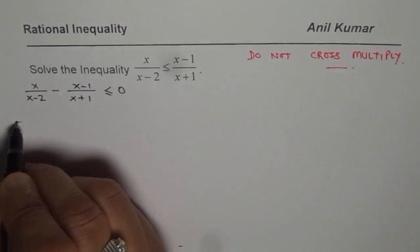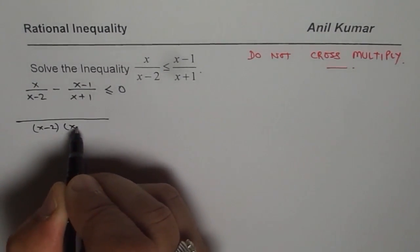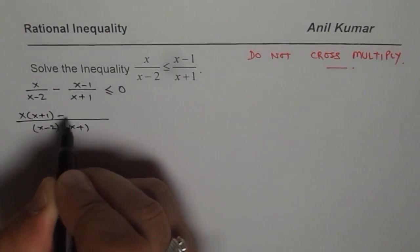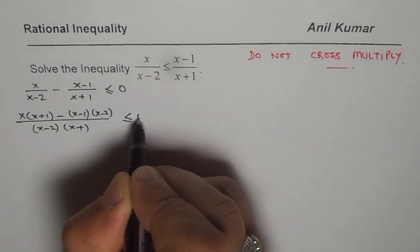Now let us take common denominator, expand and simplify. Common denominator is x minus 2 times x plus 1. You can pause the video, answer the question and then check your solution. So we have x minus 1 times x minus 2 less than equals to 0.